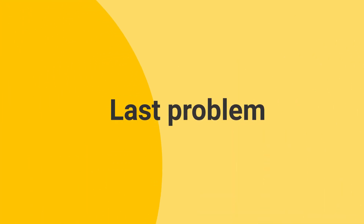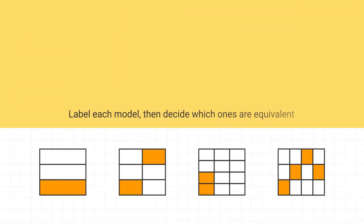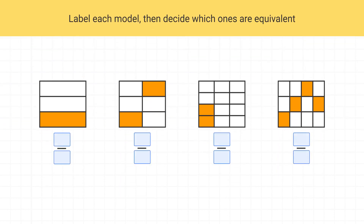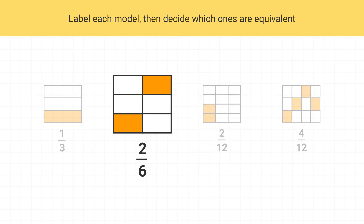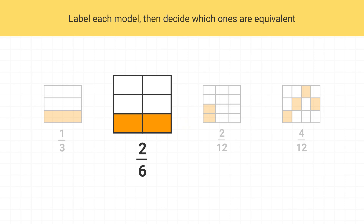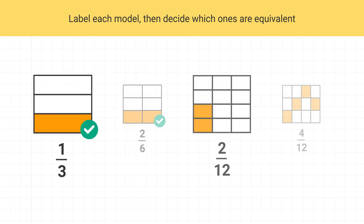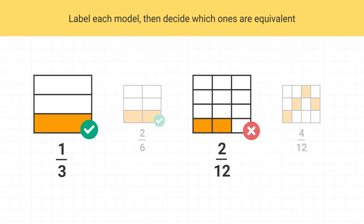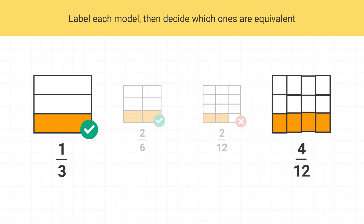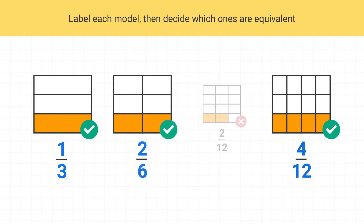Now here's your last problem for this video. Select which of these models show equivalent fractions. First, go ahead and label the fractions. Then, if you imagine taking this piece and moving it down, you see that two-sixths is equivalent to one-third. Two-twelfths is not equivalent, no matter how you try and move the pieces around. Finally, if you move all of the pieces of four-twelfths together, you can see it is the same as one-third. So one-third, two-sixths, and four-twelfths are all equivalent fractions.